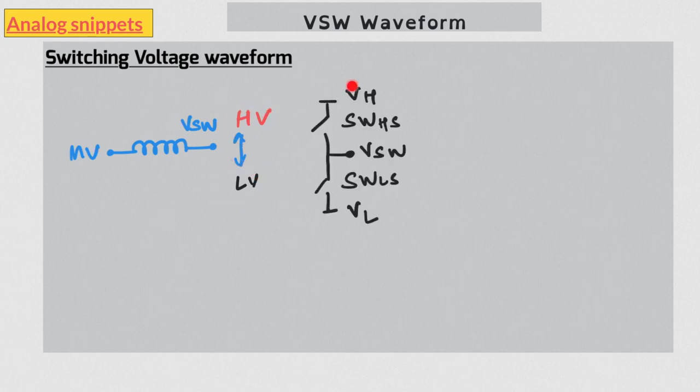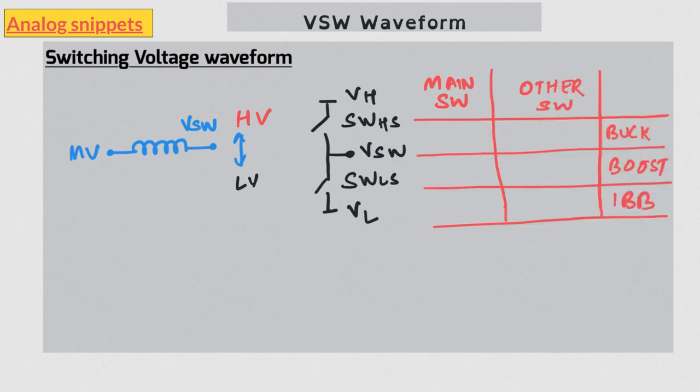Now these switches are not created equal. Depending on the converter topology, one of the switches can be replaced by a diode. Let's call the switch which cannot be replaced by diode our main switch, and let's call the other switch the other switch. In buck and IBB, high side switch is our main switch, and in the boost it is the other way around.